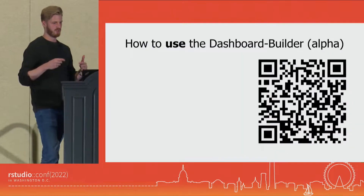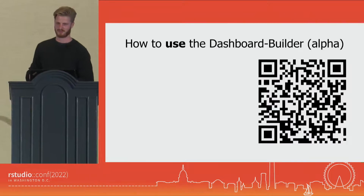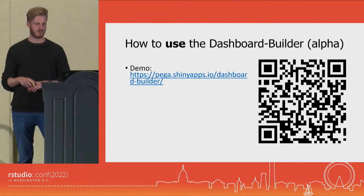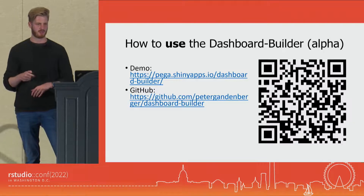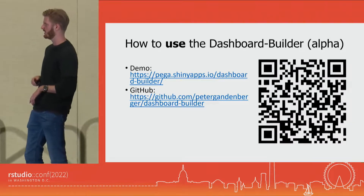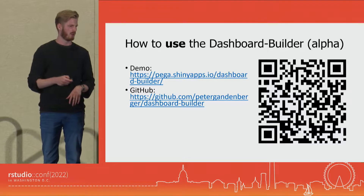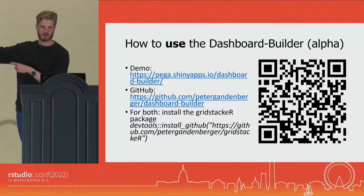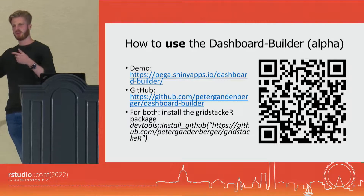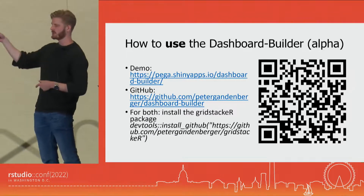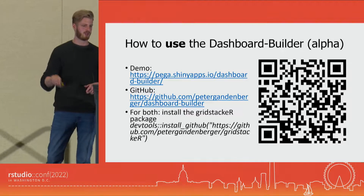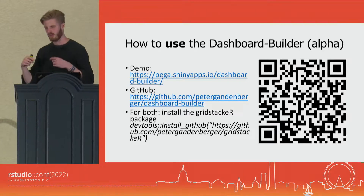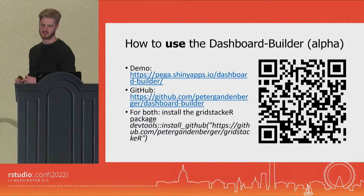I know what you all want to do — you want to use the Dashboard Builder. It's still in alpha, but it works. You can get a demo on Shiny apps, or go to my GitHub. For both — if you want to run it locally and if you want to run the apps you created — you need the gridcircle package, which you can download from GitHub. I'm going to put it on CRAN, but right now you still have to do devtools install GitHub.